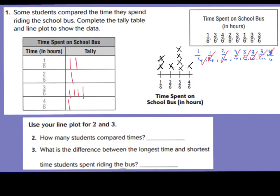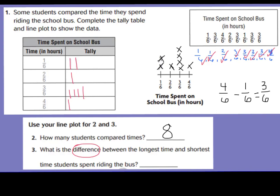Question number 2 says, how many students compared times? That's just asking how many students were surveyed. If you count up your tallies and your X's on your line plot, you can see that we had 8 students surveyed. Number 3 says, what is the difference between the longest time and the shortest time students spent riding the bus? Difference means you subtract. The largest amount of time was 4/6 of an hour, and the shortest was 1/6 of an hour. So 4/6 minus 1/6 — when we subtract fractions, you keep the denominator the same and subtract the numerator. The difference is 3/6 of an hour, also known as a half of an hour difference.